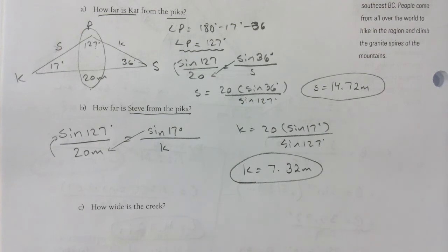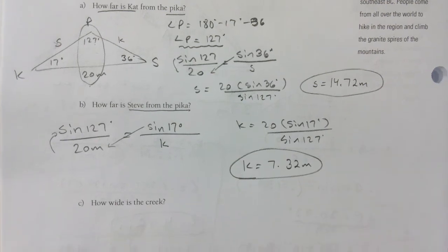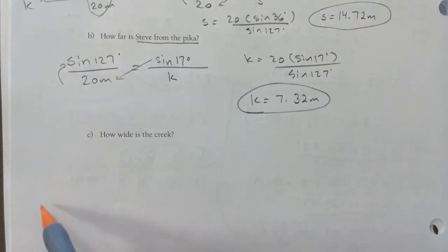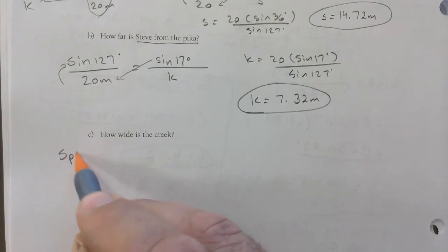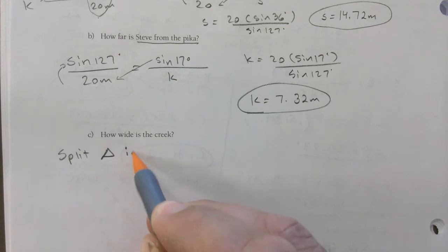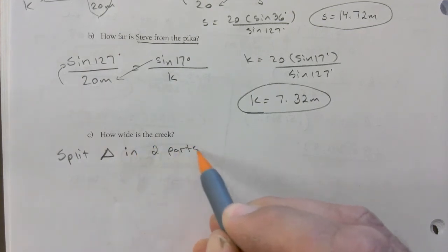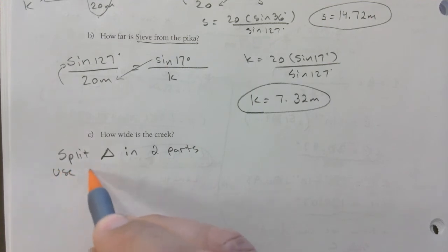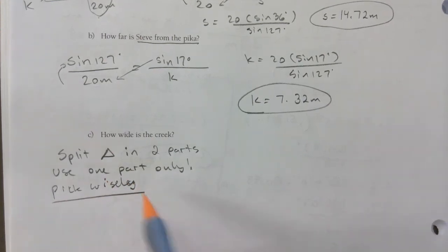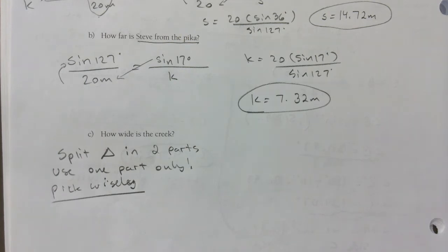And now, how wide is the creek? This is where you need to be creative. Split triangle in two parts. Use one part only. Pick wisely. Pick wisely—like the triangle with the most information is the one you want. In this case, they both have equal amounts of information, so it doesn't matter which one you pick.